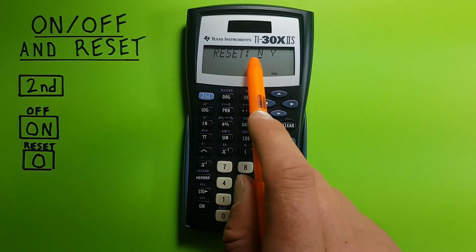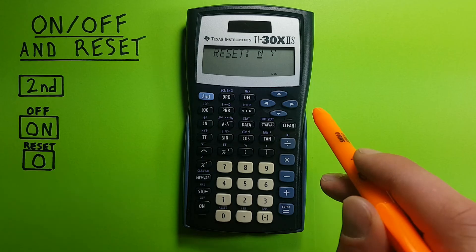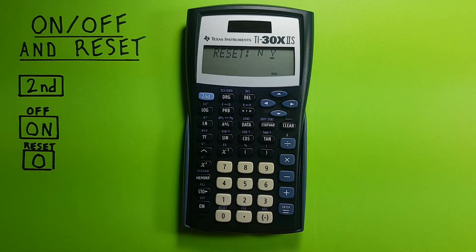Brings up this option, reset. Cursor starts on no. If we want to reset it, we move it to the Y. So, once to the right, Y for yes, and enter. Mem cleared, and the calculator has been reset.